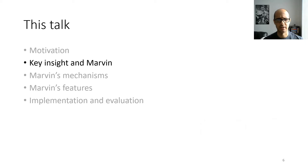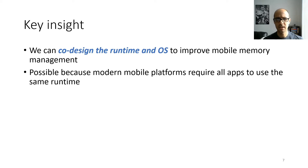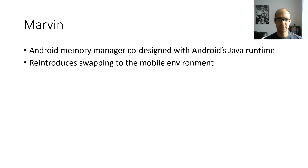Our key insight is that we can co-design the runtime and the operating system to improve mobile memory management. This is possible because modern mobile platforms like Android and iOS require all apps to use the same runtime. So we built a new memory manager for Android called Marvin, which is co-designed with Android's Java runtime, and Marvin is going to reintroduce swapping to the mobile environment.